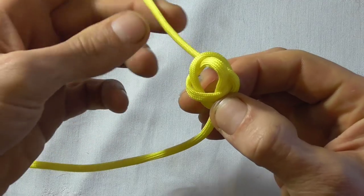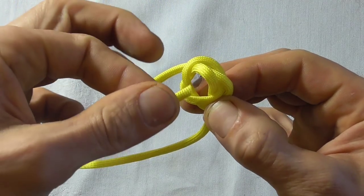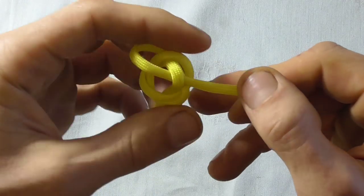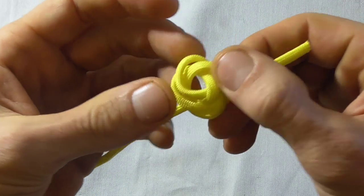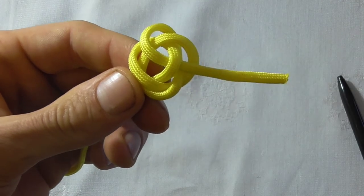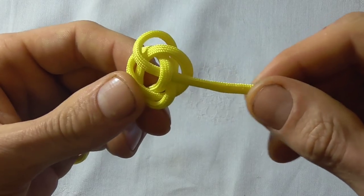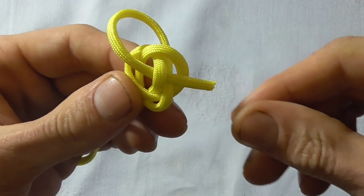Then I can take my working end and just push it straight through that loop. And there we'll have the finished knot in its loose form and we just need to tighten the whole thing up and we have to do this bit by bit otherwise the knot's going to distort.